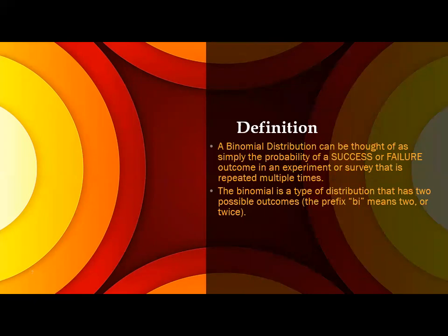The binomial is a type of distribution that has two possible outcomes. The prefix 'bi' means two or twice. This is the formal definition for the binomial distribution.